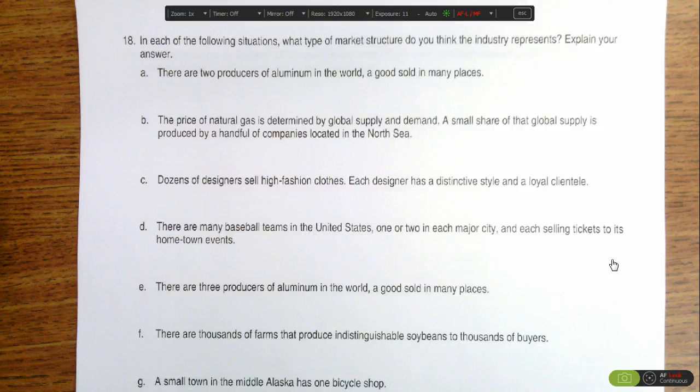Part C, dozens of designers selling high fashion clothes, each with its own style. So there are lots of different designers, but each firm produces a unique product. So that would make it a monopolistic competition.